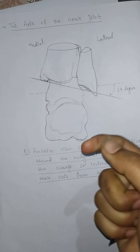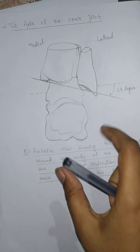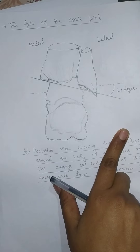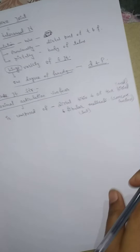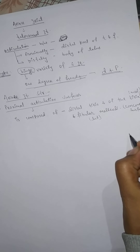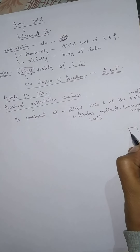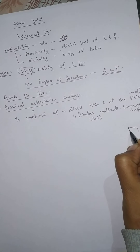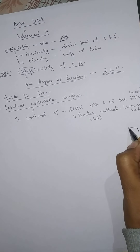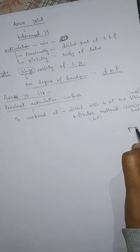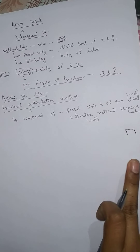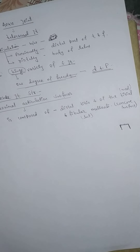The structure of the distal tibia and the malleoli resembles and is referred to as a mortise. A mortise is a bracket shape — this bracket is formed by the tibia and fibula, specifically the distal tibia and fibula, creating a mortise structure.